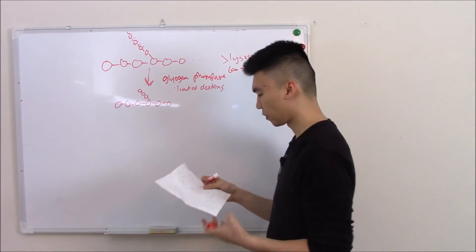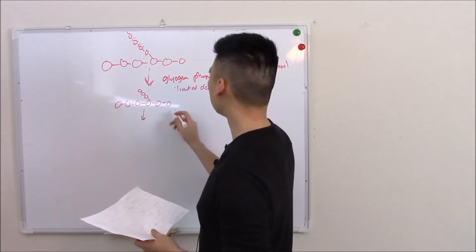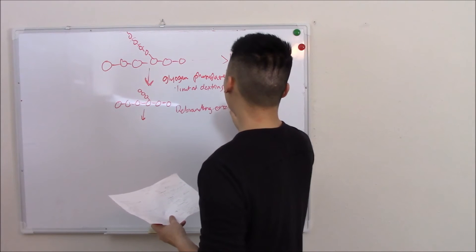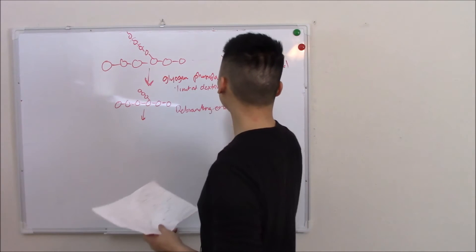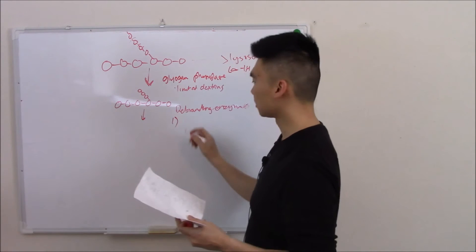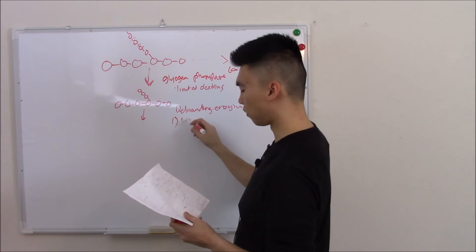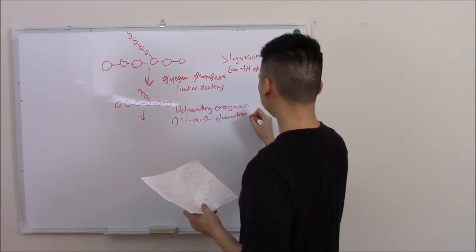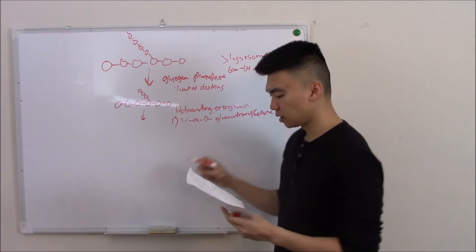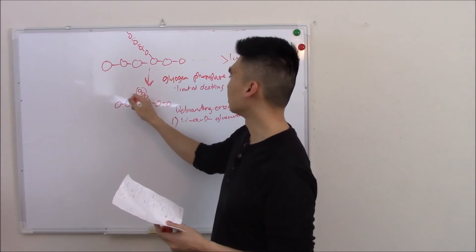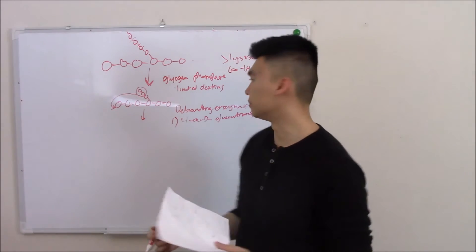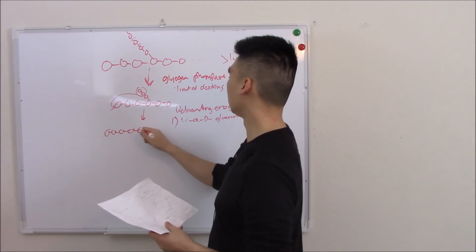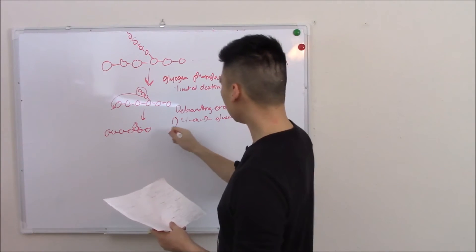Now it looks like this. Next it gets worked on by an enzyme called the debranching enzyme, and this is quite a doozy of an enzyme. It actually has two functions. The first uses 4-alpha-D-glucanotransferase to move this limited dextrin to the end, so it should kind of look like this now.